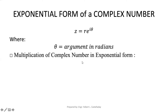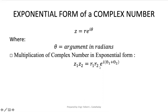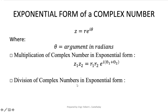To multiply complex numbers in exponential form, the same idea applies as for polar form: we multiply their moduli — r sub 1 times r sub 2 — and add their arguments, theta sub 1 plus theta sub 2. Again, theta is in radian measure. To divide complex numbers in exponential form, we divide the moduli — r sub 1 divided by r sub 2 — and subtract their arguments, so e raised to i times (theta sub 1 minus theta sub 2).